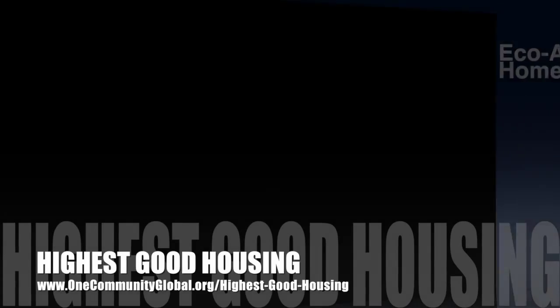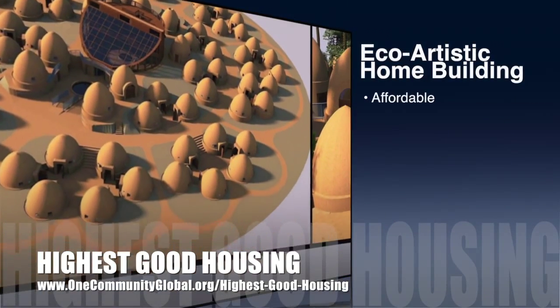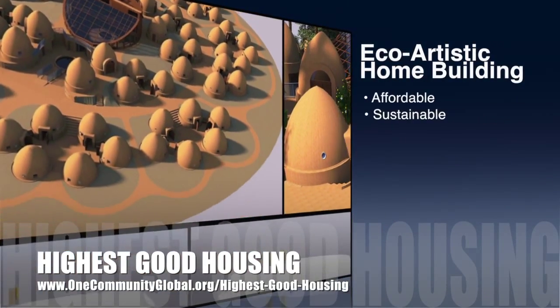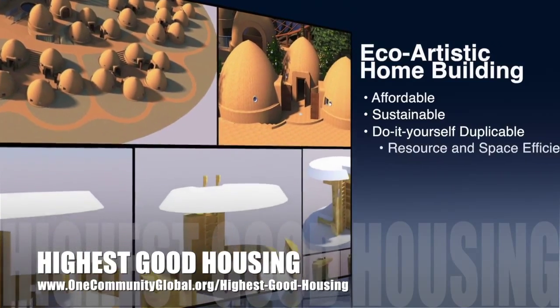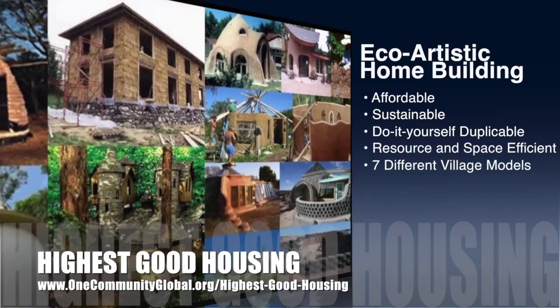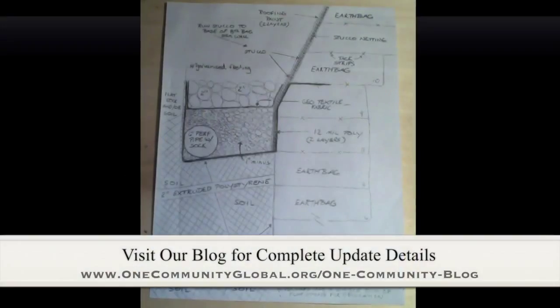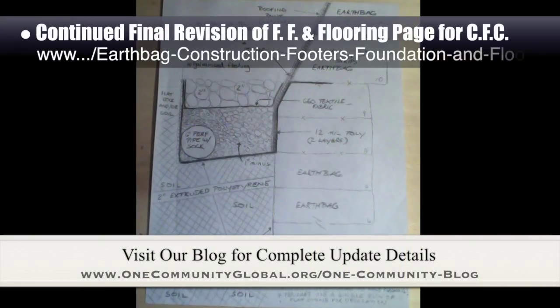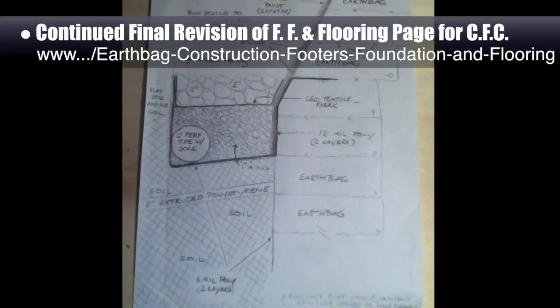The One Community approach to Highest Good Housing is eco-artistic home building that is affordable, sustainable, do-it-yourself duplicable, resource and space efficient, and consists of seven different sustainably constructed village models. This last week, the core team working on Highest Good Housing continued what we hope will be the final revision of the footers, foundation, and flooring page for the upcoming crowdfunding campaign.